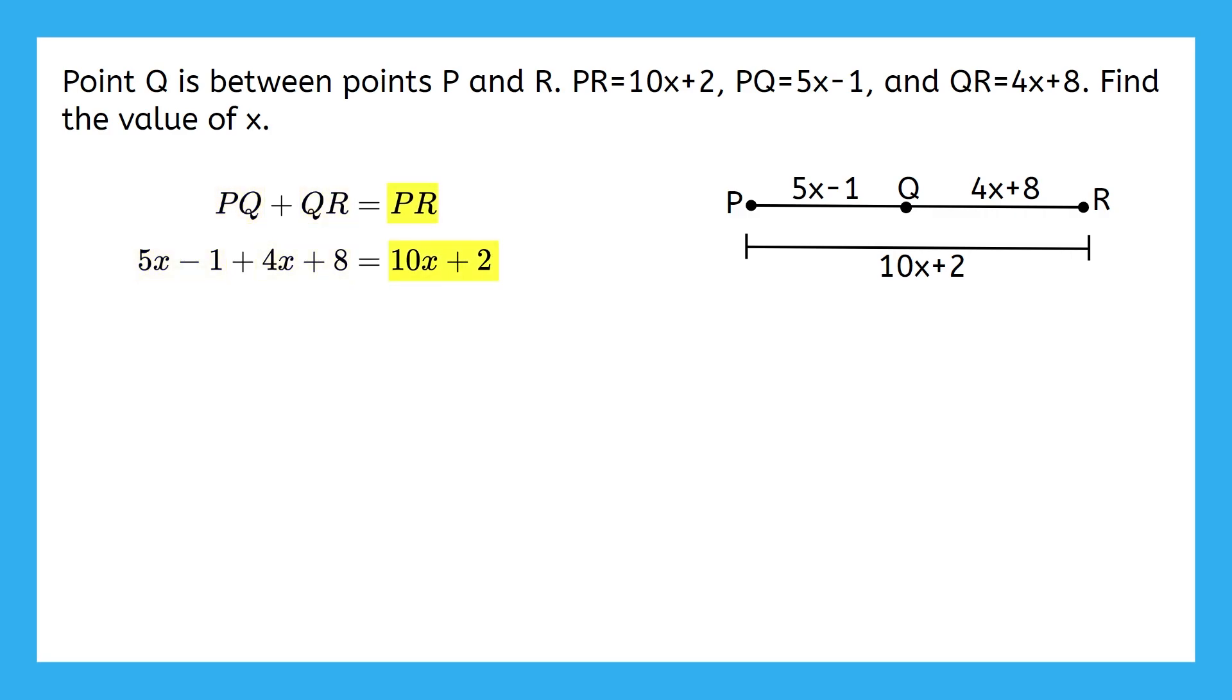Now, let's combine like terms that are on the same side of the equation by adding 5X and 4X to get 9X and adding negative 1 and 8 to get 7.